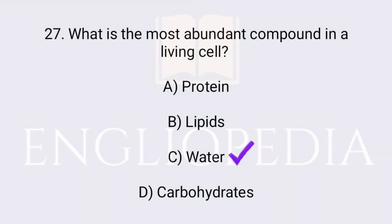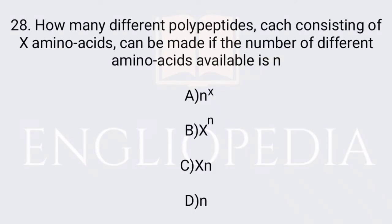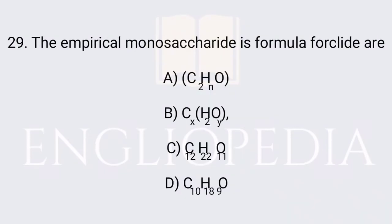Water is the most abundant compound in a living cell. How many different polypeptides, each consisting of x amino acids, can be made if the number of different amino acids available is n? The answer is n to the power x polypeptides. The empirical monosaccharide formula is CH2O.